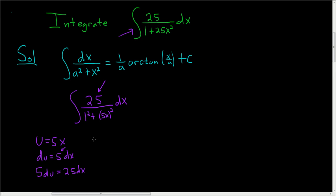Now we're ready to make our substitution. 25dx, that's right here, becomes 5du. So this equals the integral of 5du over (1² + u²), because u was 5x.